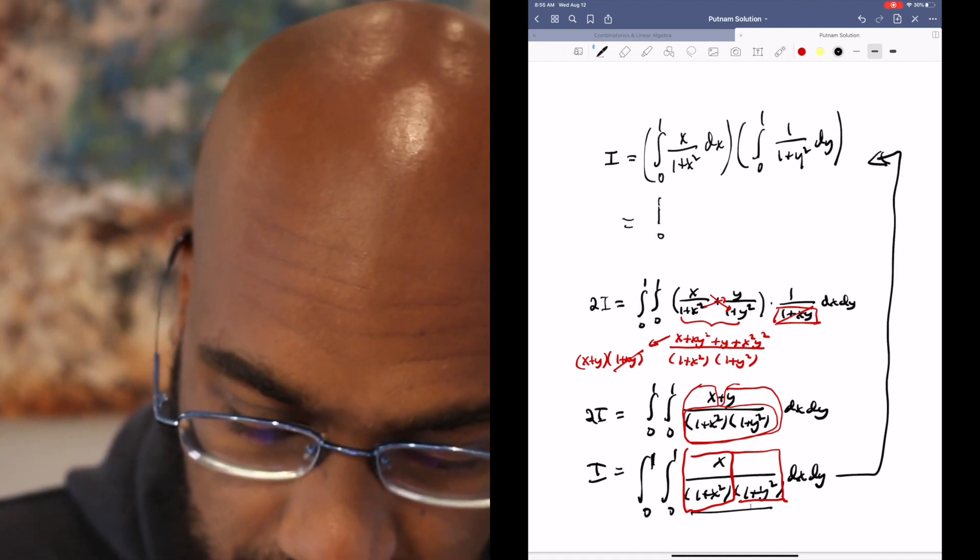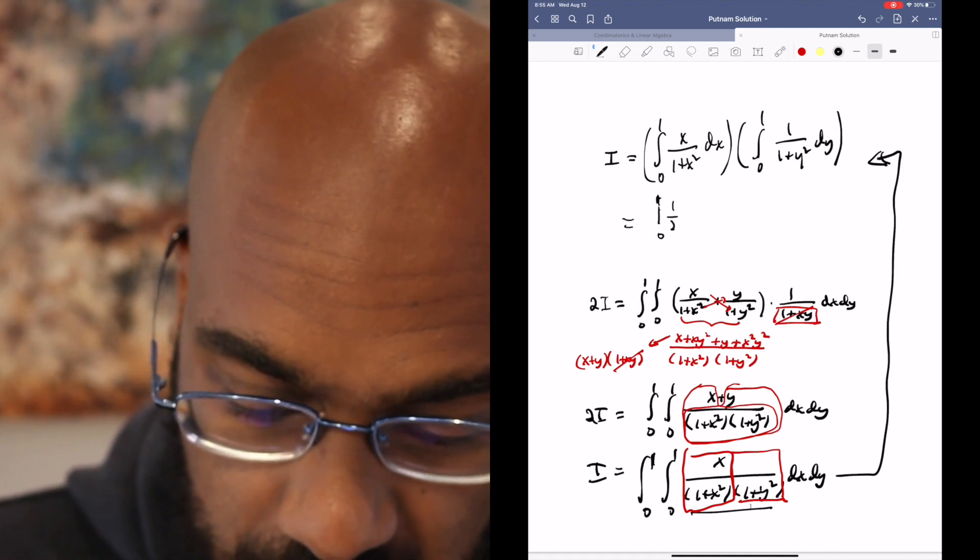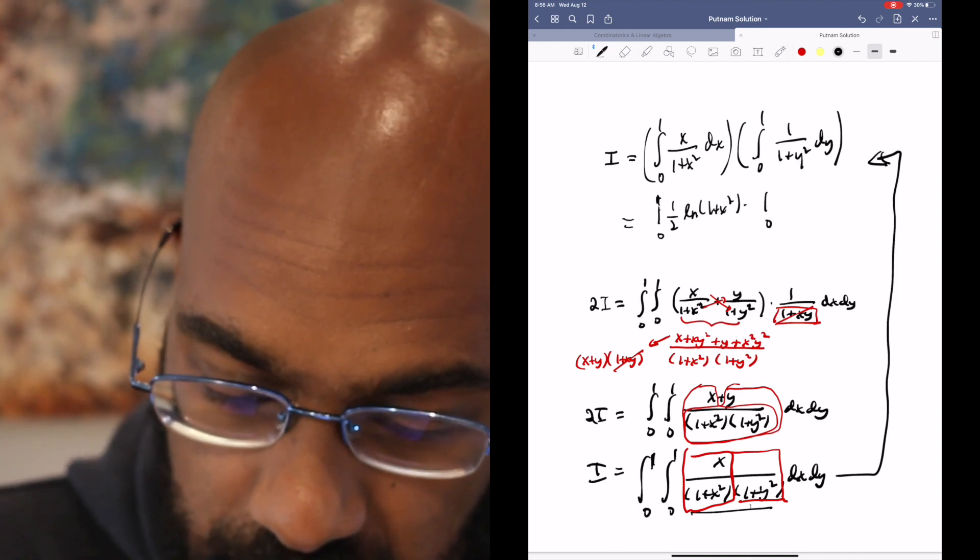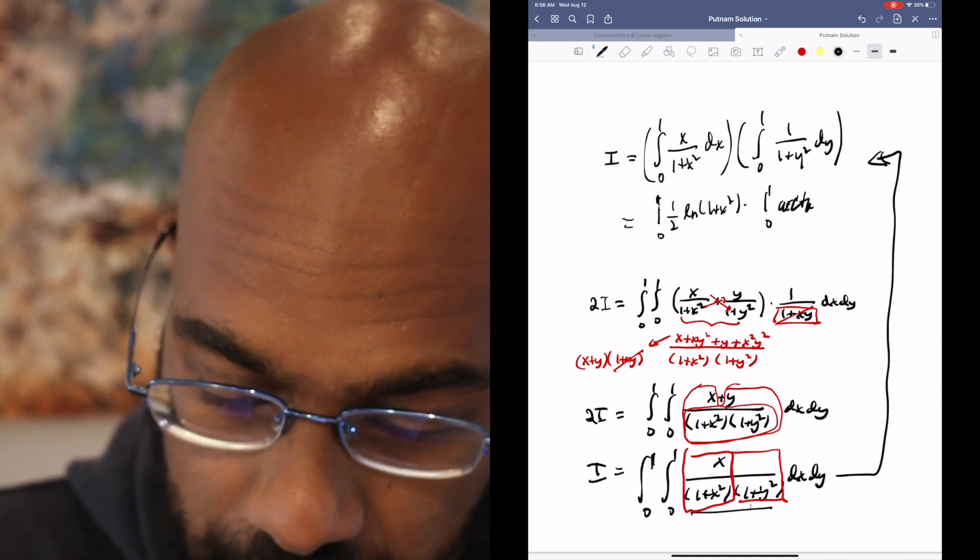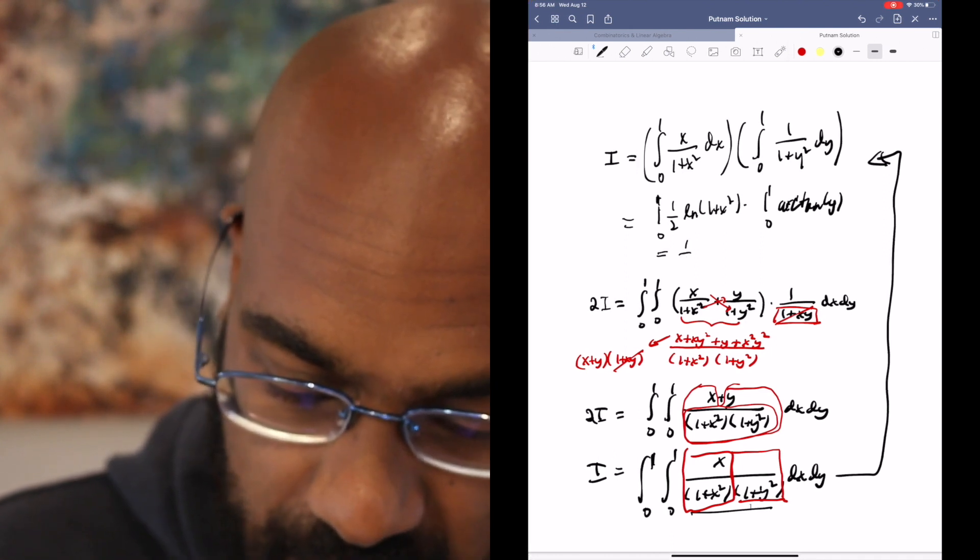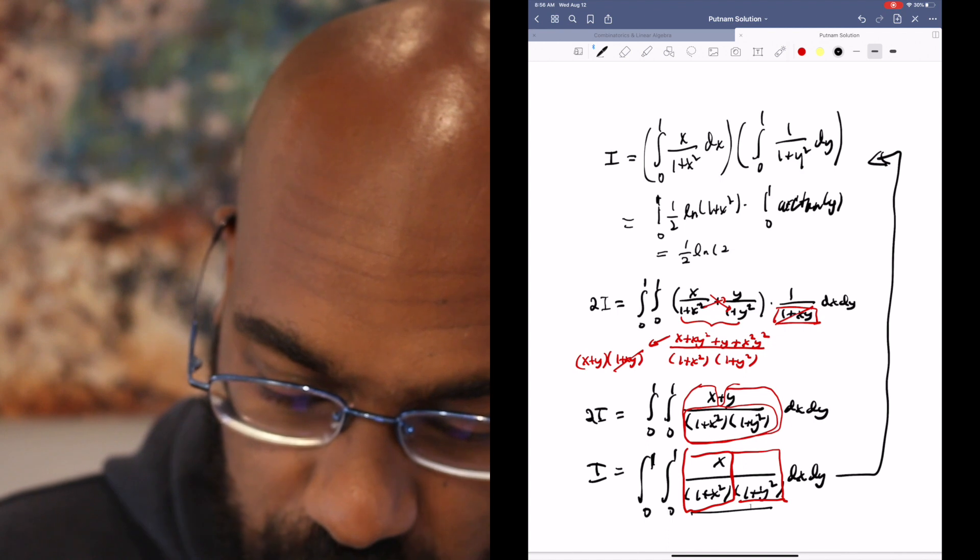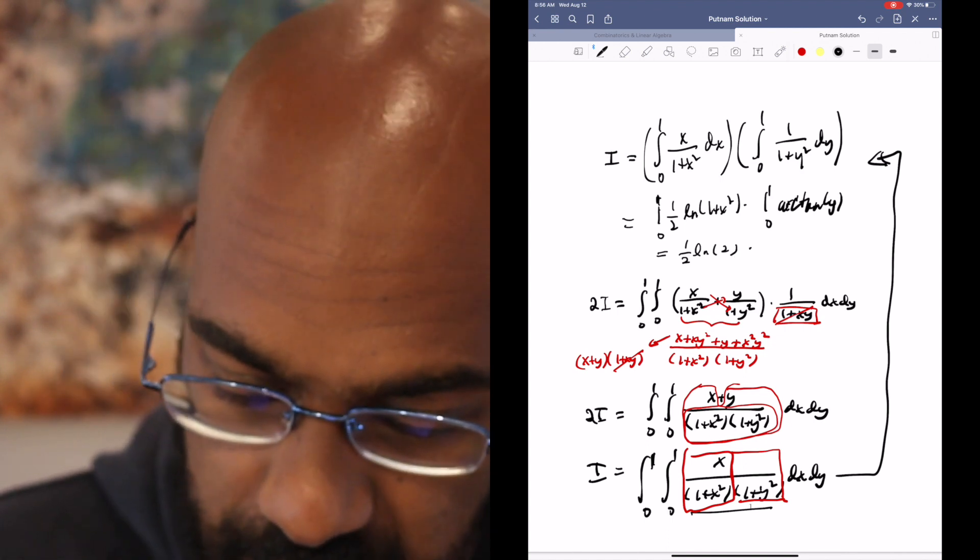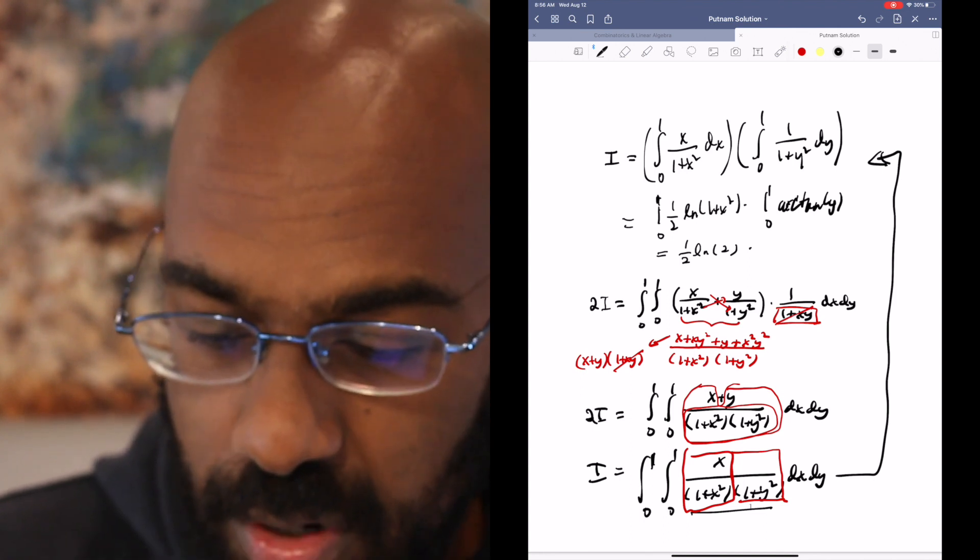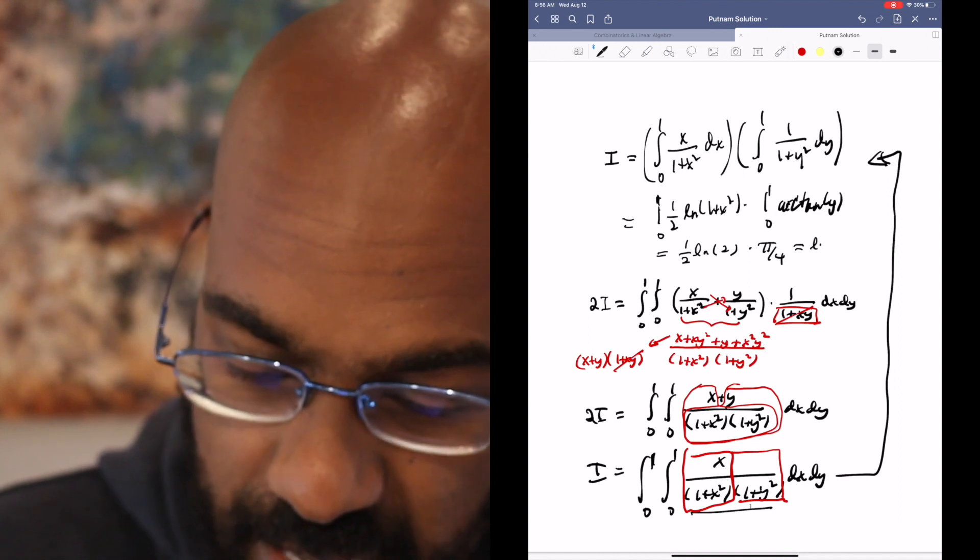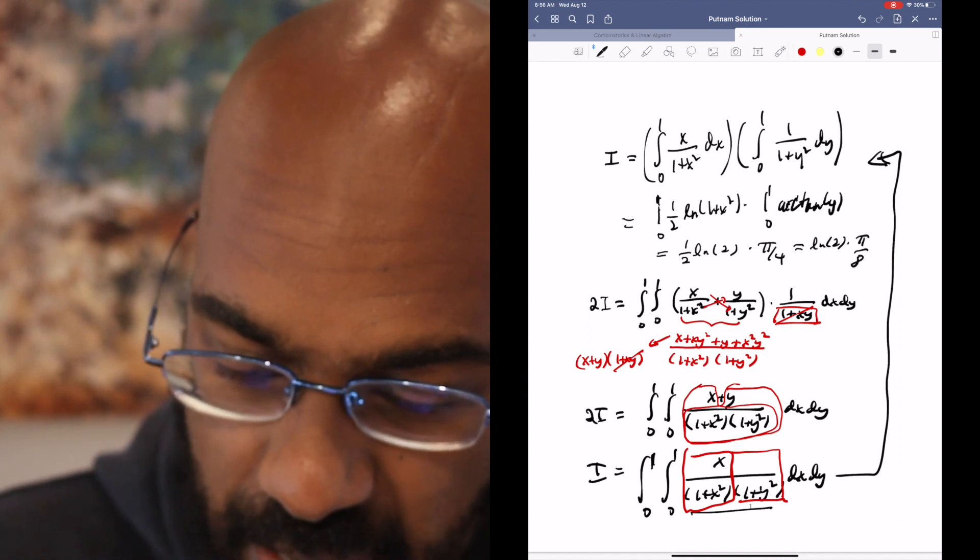The first one is the evaluation from 0 to 1 of a half of ln of 1 plus x squared, and the second one is the evaluation from 0 to 1 of arc tan y. This works out to be 1 half ln of 2. We have an ln of 1 which is 0 as the other piece, and then here we'll have pi over 4 minus 0, so that's pi over 4, which gives us the final answer of ln of 2 times pi over 8.